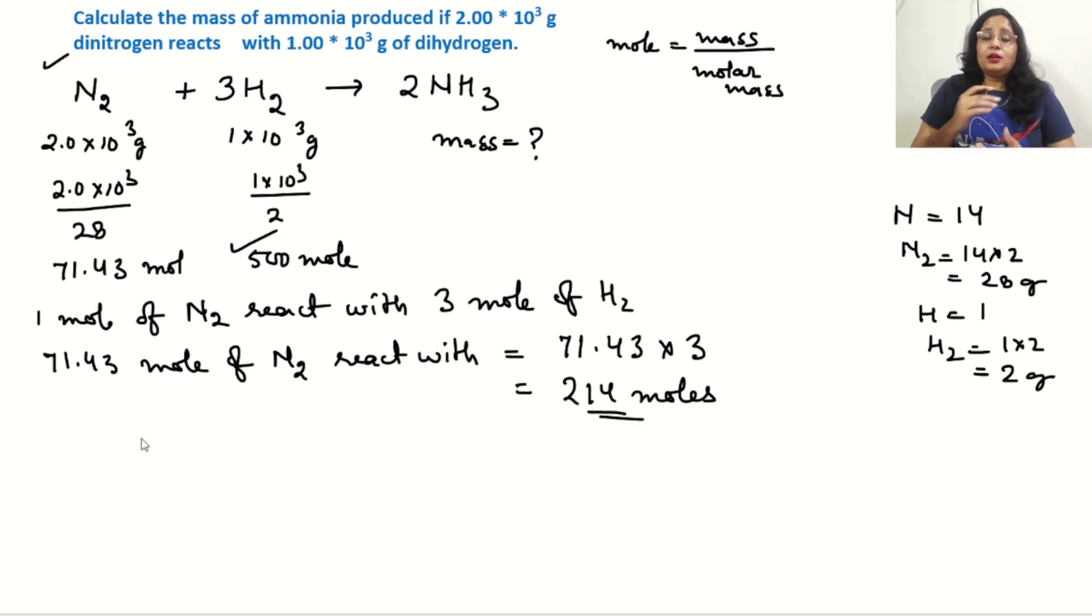Since 214 moles of hydrogen are used and 500 moles are available, hydrogen is in excess in this reaction. The mass of ammonia will fully depend on the mass of nitrogen because nitrogen is the limiting reagent. Hydrogen is in excess, so some hydrogen will remain unreacted.